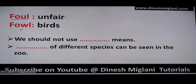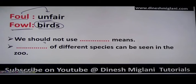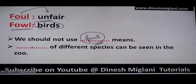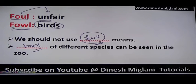Next: foul (F-O-U-L) means unfair. Fowl (F-O-W-L) means birds. Although both words sound similar, they are spelled differently. Example: 'Fowl of different species can be seen in the zoo' — here F-O-W-L refers to birds.